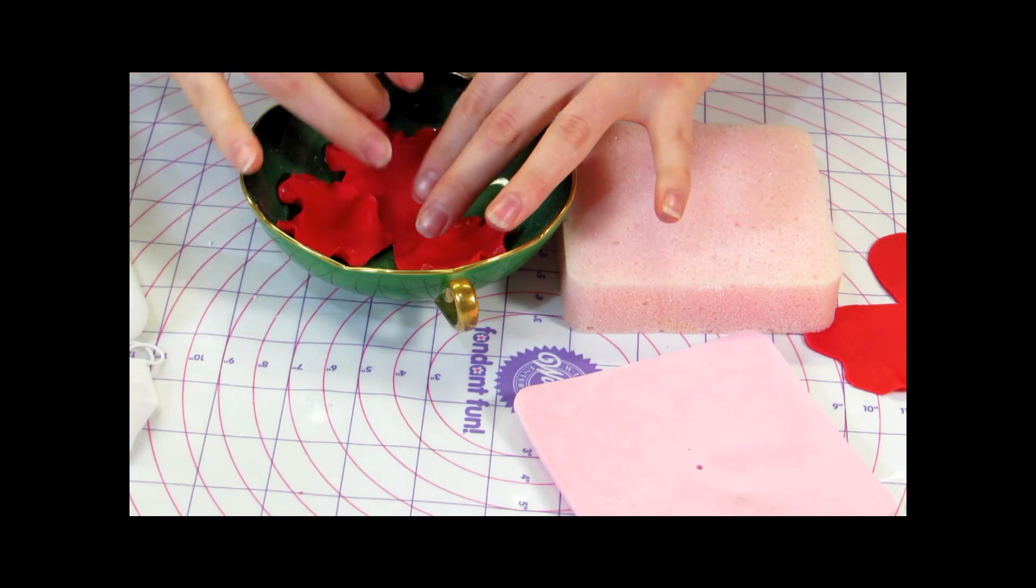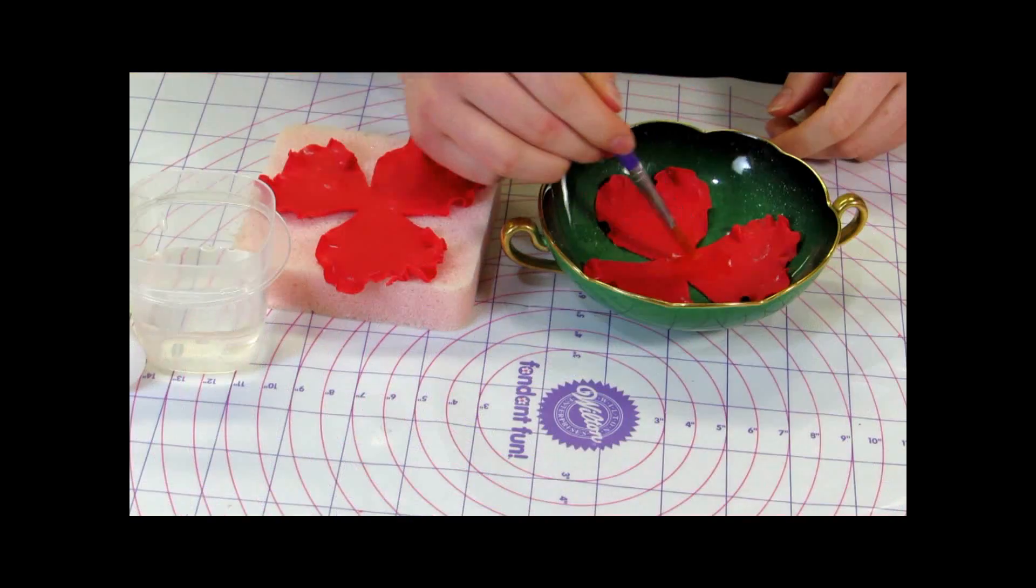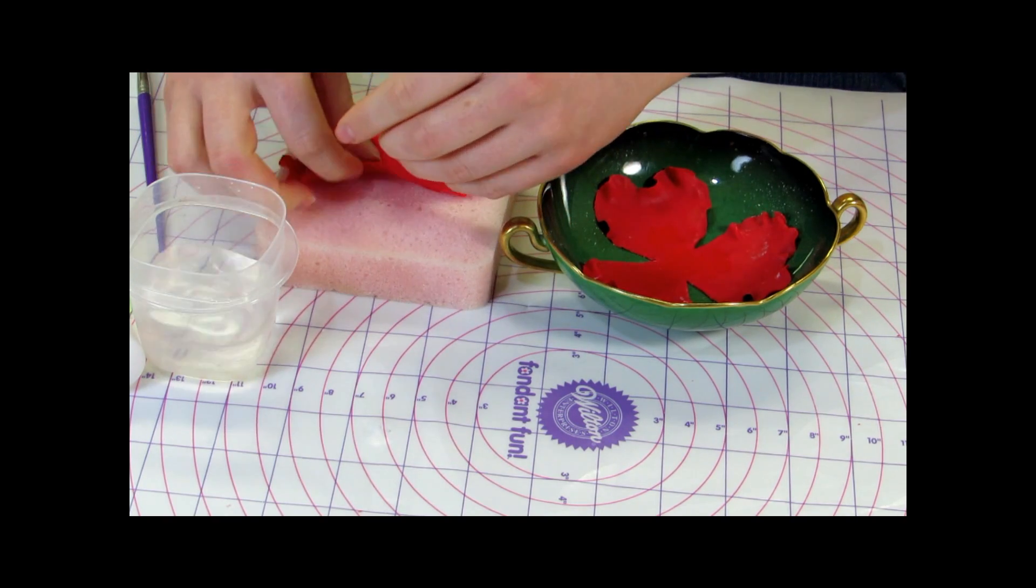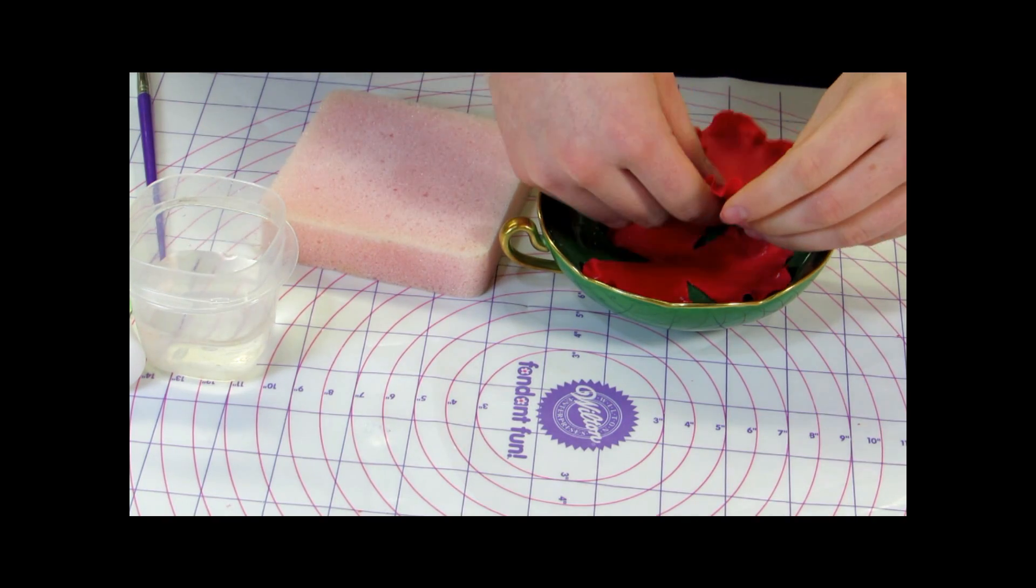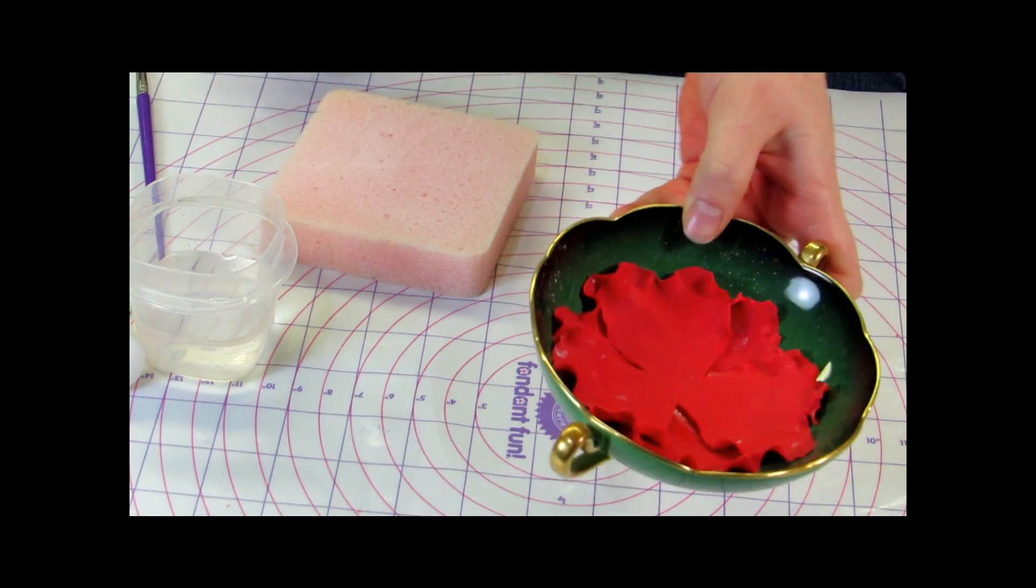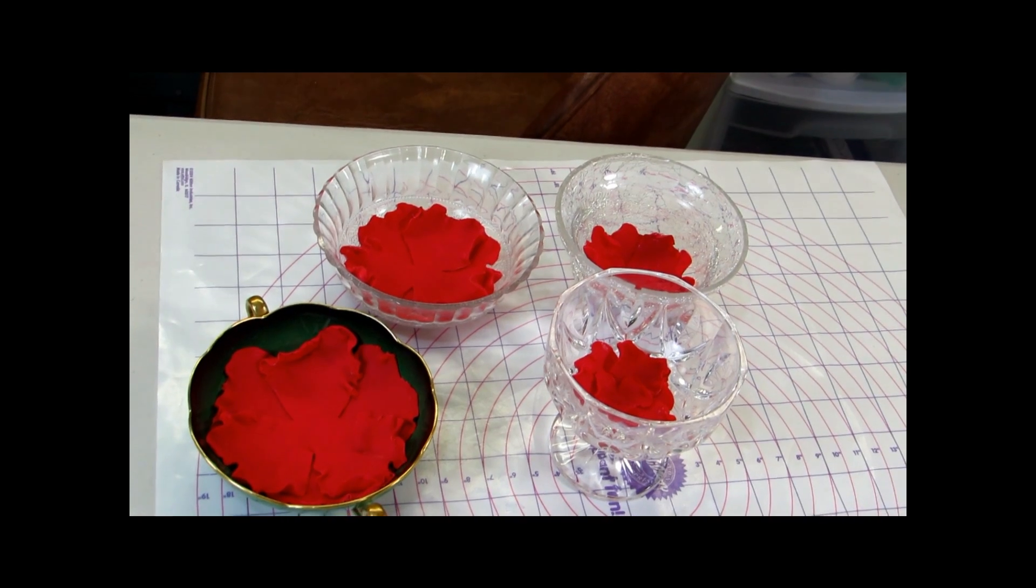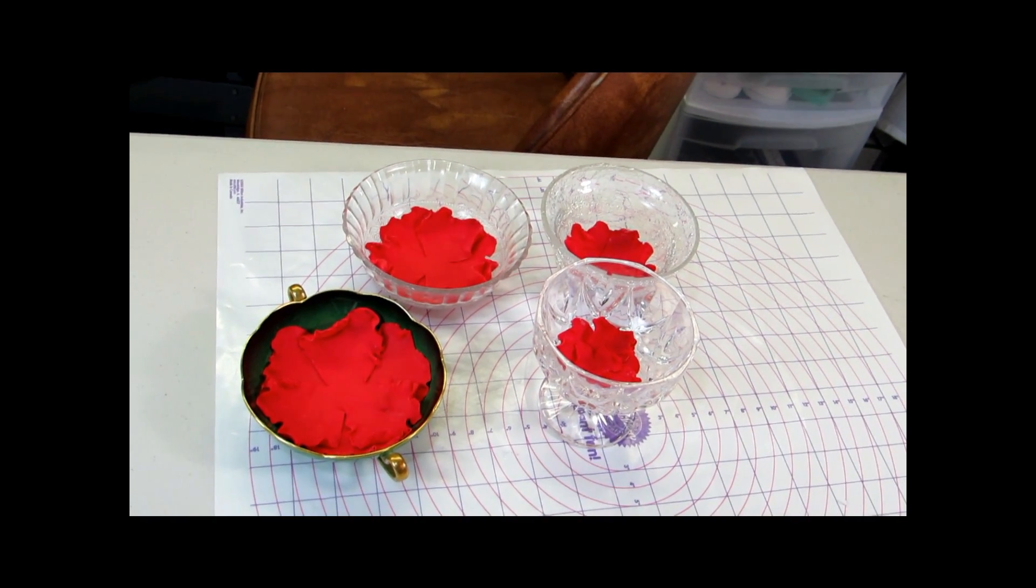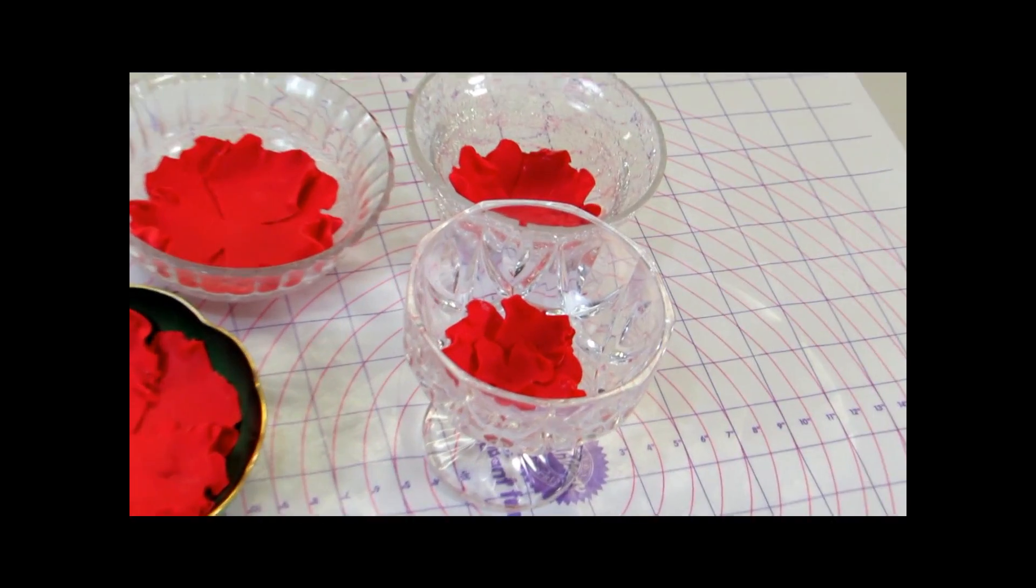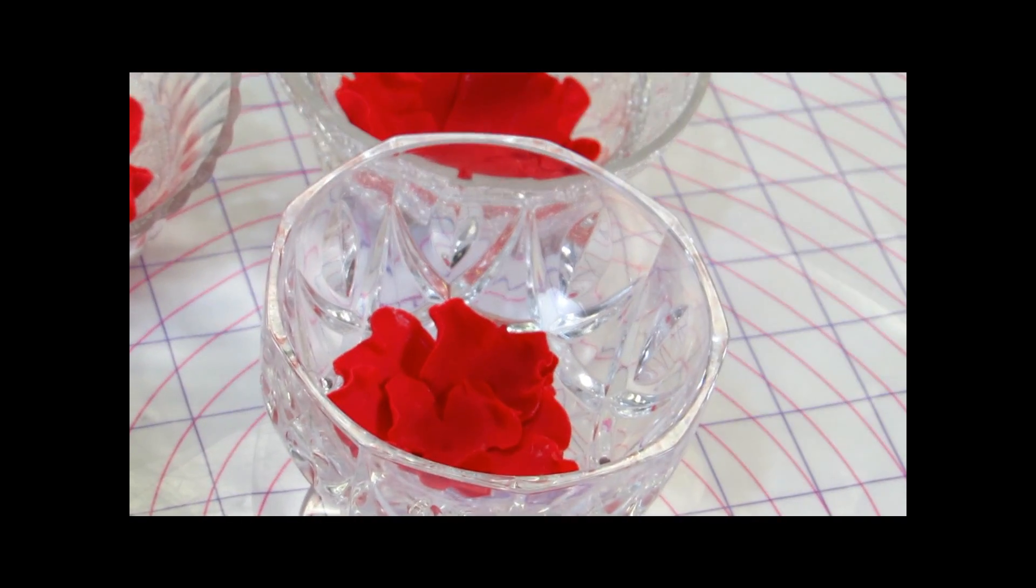Place that into a little bowl to dry and then when you place your second flower into the bowl, you want to make sure you're staggering the petals so that way they don't overlap each other. And then you want to set them into different sized bowls to dry overnight. You can see that I used a large bowl for my large flowers and a small bowl for my small flowers.